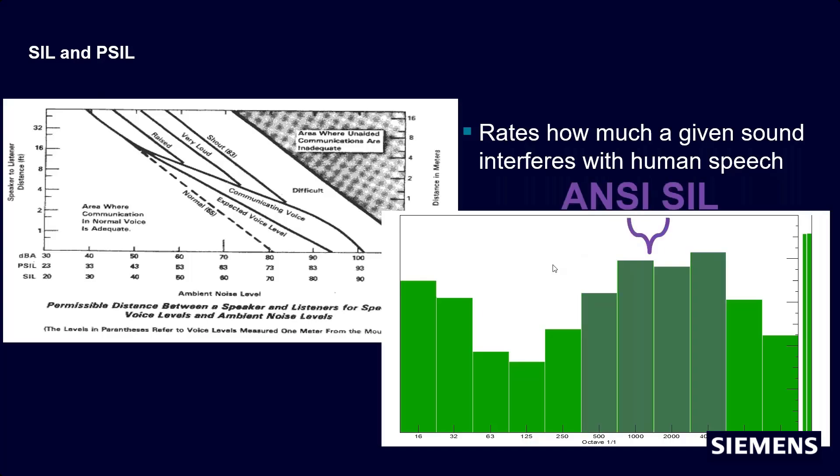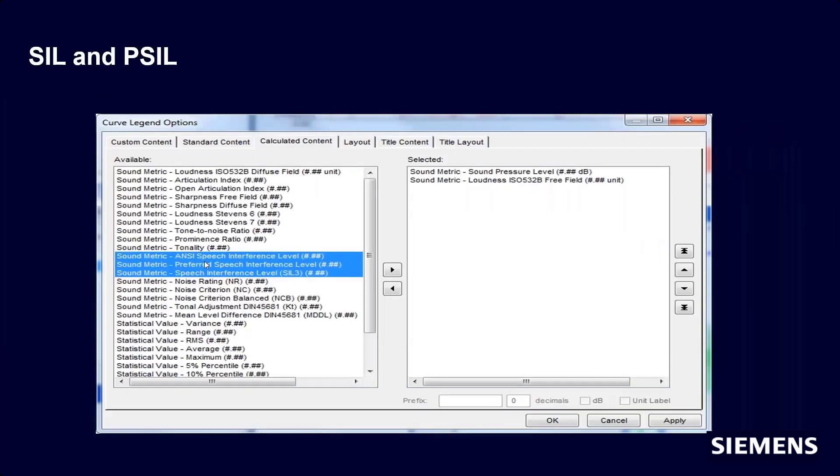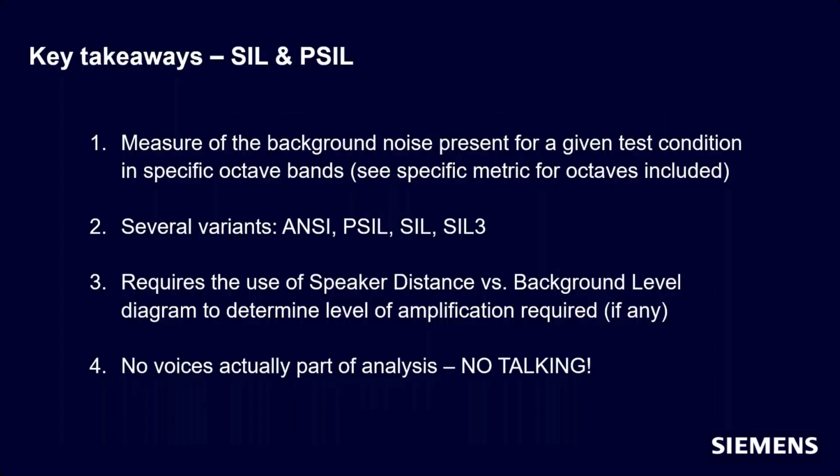If you want to do this in test lab, it's super easy. All you need to do is right-click on your data, go to calculated content, add these guys in, and then you should be good to go. It will give you your PSIL or SIL or whatever you choose for your data.